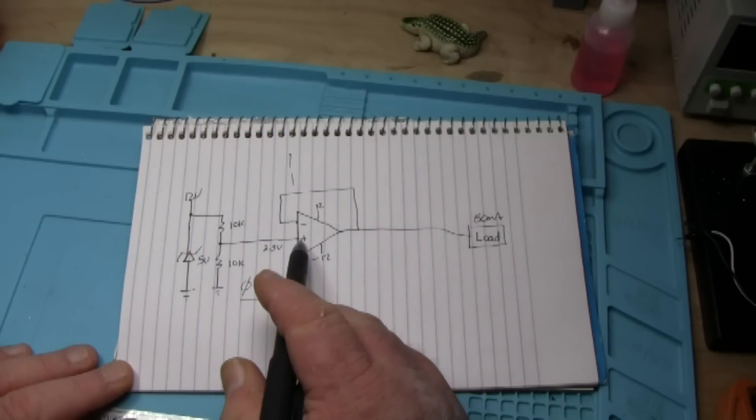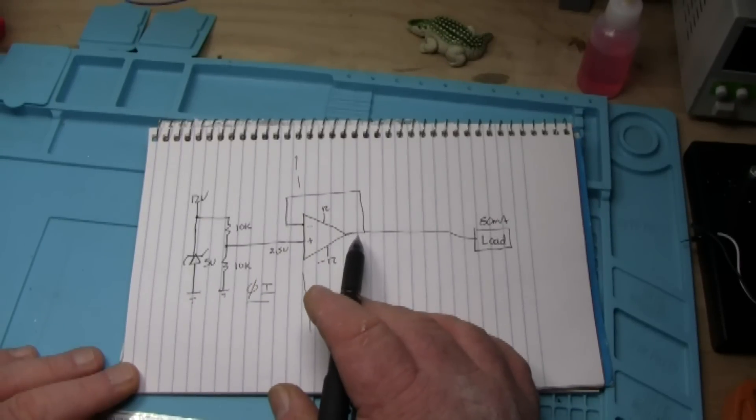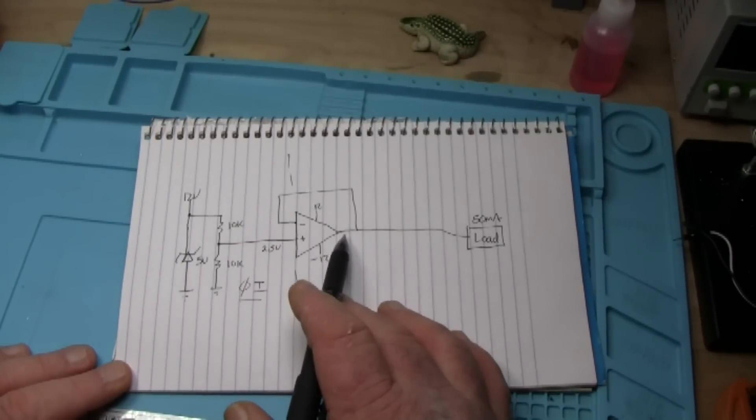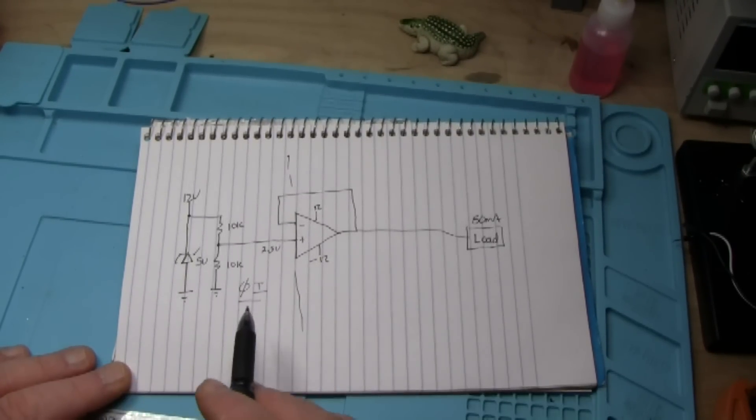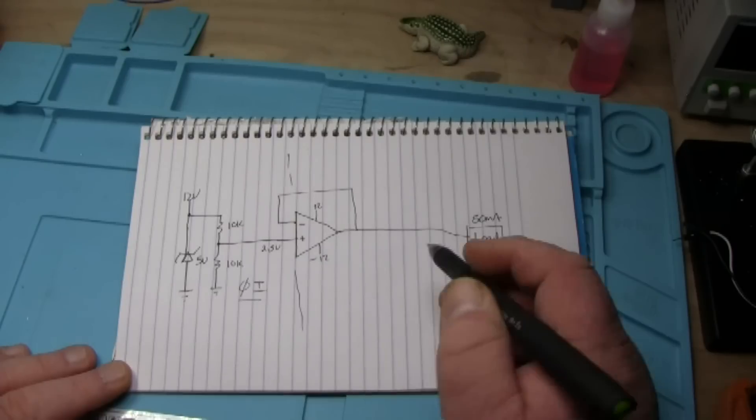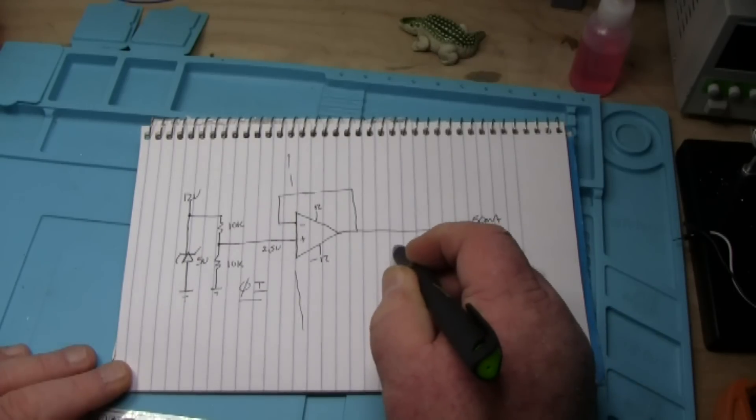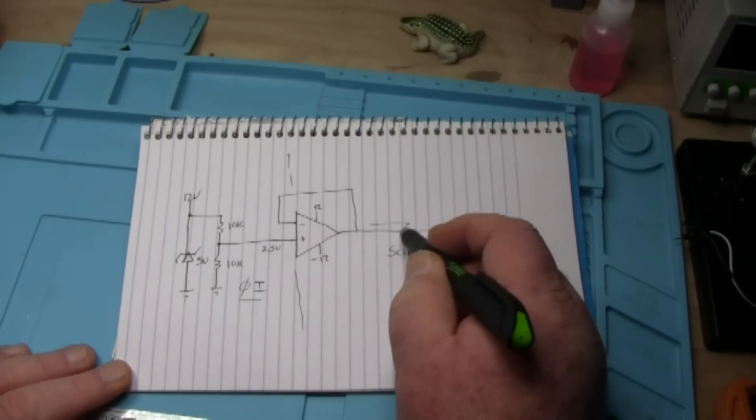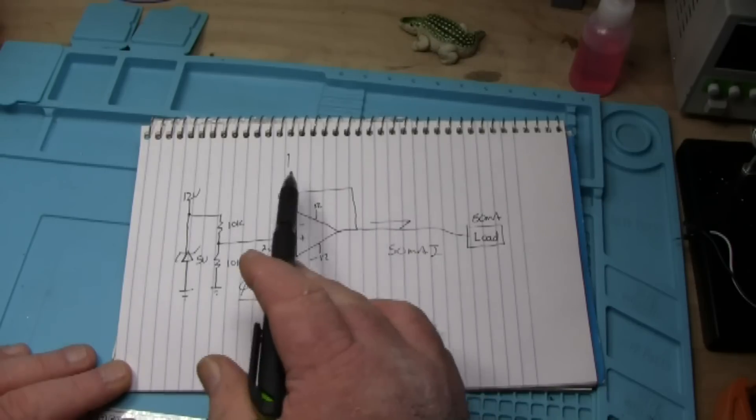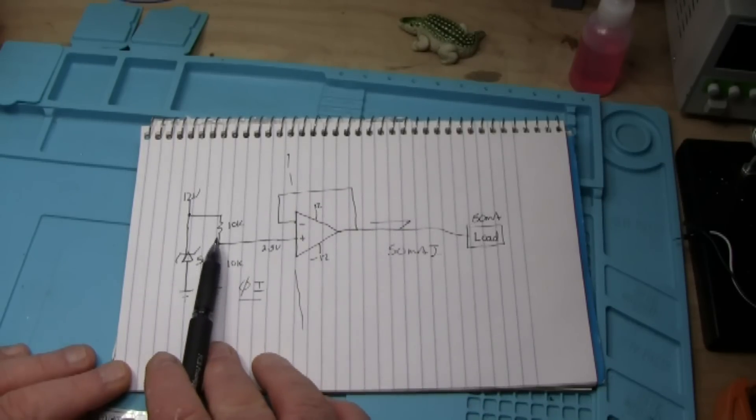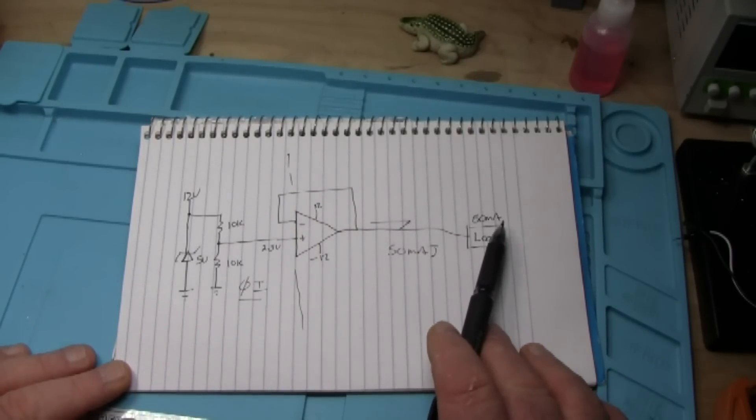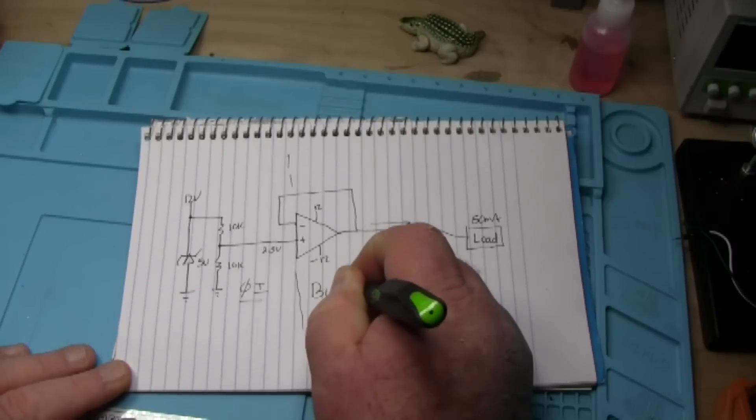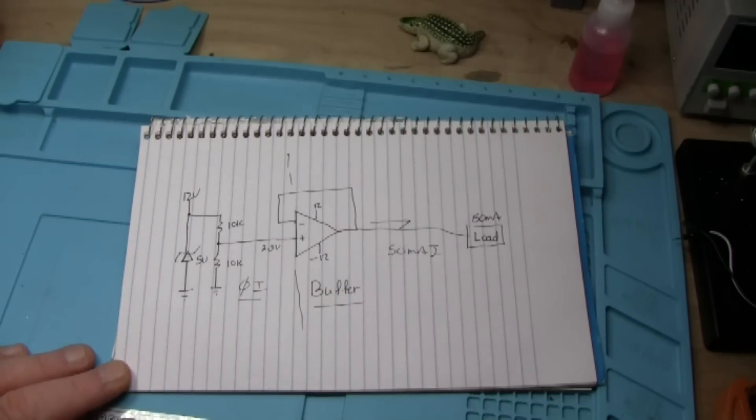That's our high impedance input. But we have a low impedance output that means it can supply, it can source a very high current. So over here we get our 50 milliamp of current flow no problem. We have effectively isolated this part of the circuit from this part of the circuit with our voltage follower which is also known as a buffer.